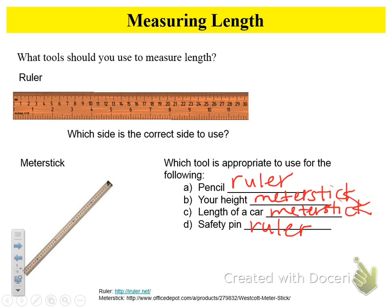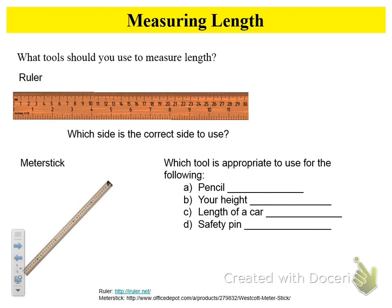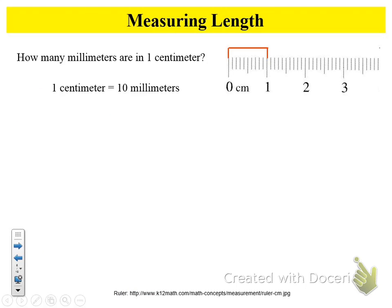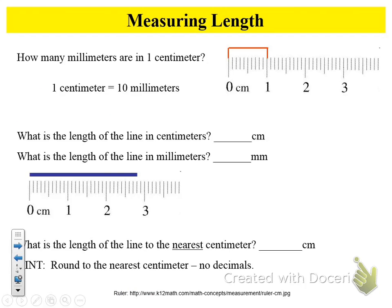You ready to jump back to number seven and finish out our notes for length? Take two minutes on number seven. You don't need an actual ruler — I'm going to put it up on the board so you can see it. Use that as your ruler. Work with your shoulder buddy if you need help. Two minutes — go.